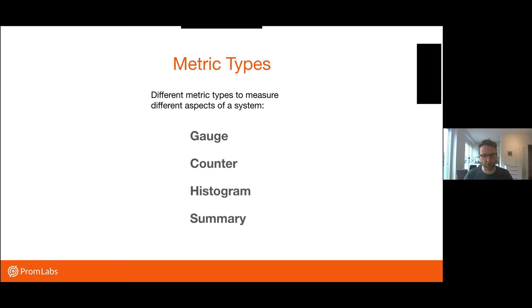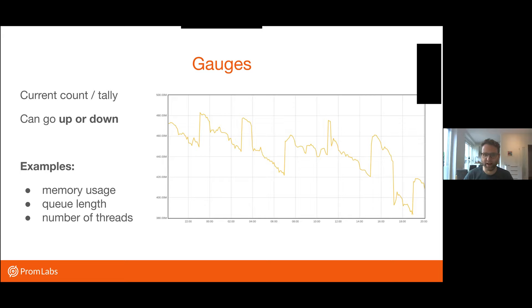A gauge is some kind of value that can go naturally up or down. It's a current count, a current tally of something. Often the value that you're exposing with a gauge already exists in some form and you're just exposing it. It might be the current queue length, memory usage, or the number of threads. You're just sticking a gauge into whatever is happening there. That's why it's called a gauge. Getting a reading, like what is the current situation that's going on there. So a number that just goes up and down.